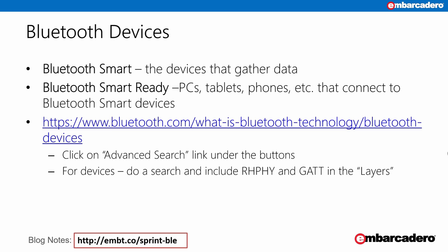Bluetooth devices come in both Bluetooth Smart and Bluetooth Smart Ready. Smart Ready devices are the PCs, tablets, phones, and other hardware that can connect to and get data from or send data to Bluetooth Smart devices. There's a search engine on the Bluetooth site to look for devices and manufacturers that support Bluetooth standards. Using the advanced search link, if you're looking for devices, put in the vendor name or device name and include RH, PHY, and GATT in the layers edit box. That'll give you devices like heart rate monitors, glucose measurement devices, digital scales, and others.